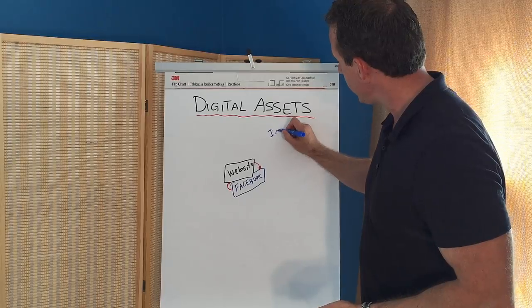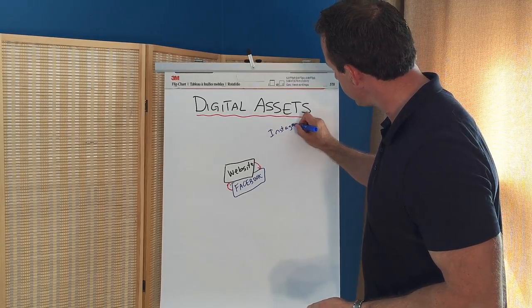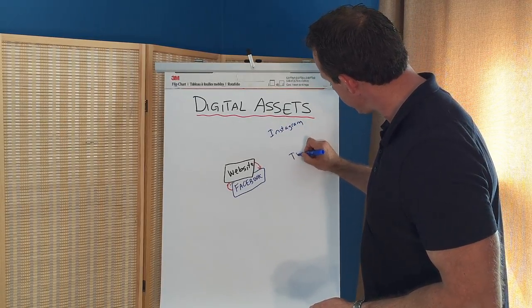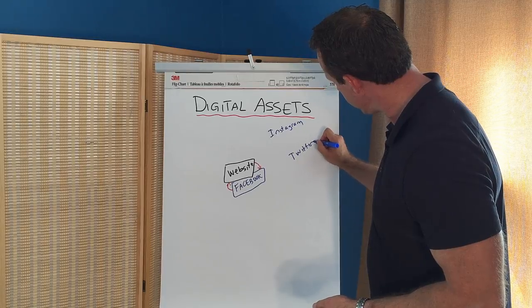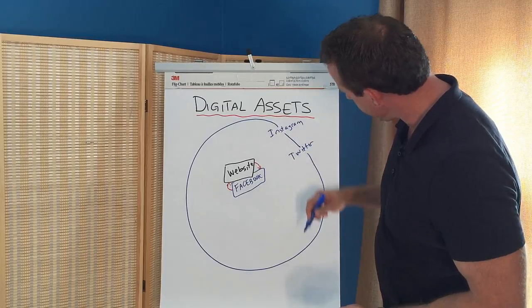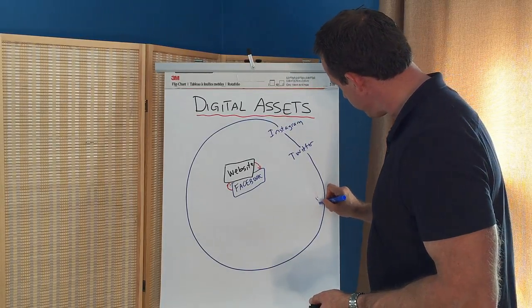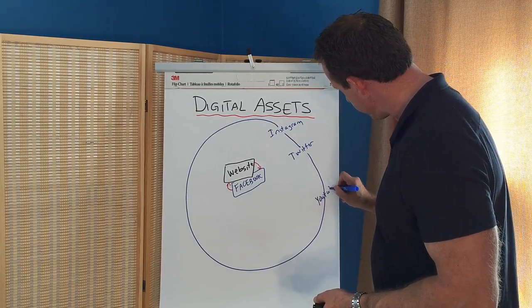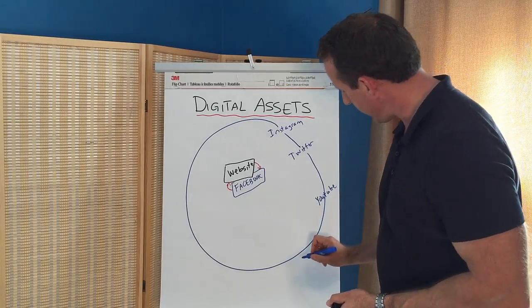So, for instance, I have Instagram, Twitter. I'm going to put these all in a big circle. Instagram. Then, I have YouTube. I have LinkedIn.